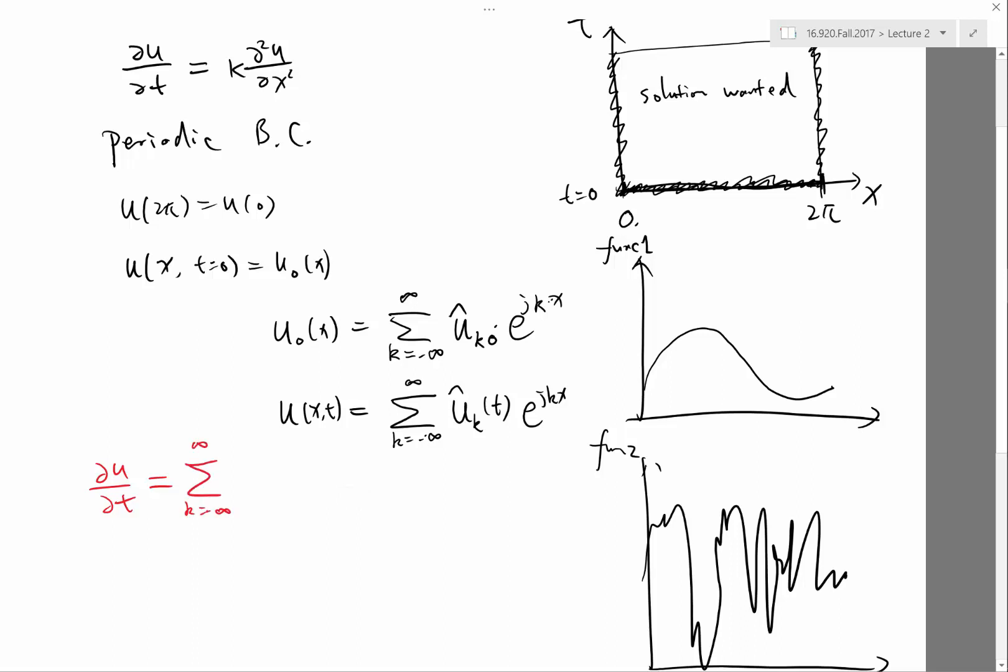The summation is still minus infinity to infinity. And how would the u hat of k change? It becomes the derivative of u hat k. Now we have the ordinary derivative because u hat of k only depends on time.